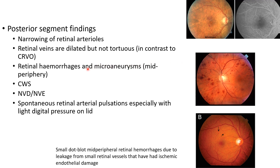There can be retinal hemorrhages and microaneurysms, especially in the mid-periphery. This picture shows microaneurysms in a case of ocular ischemic syndrome and this is the corresponding fundus fluorescein angiography image. This picture shows retinal hemorrhages in mid-periphery. These small dot-blot mid-peripheral retinal hemorrhages can occur due to leakage from small retinal vessels that have had ischemic endothelial damage. Other posterior segment findings are cotton wool spots, neovascularization of disc, neovascularization elsewhere, and spontaneous retinal artery pulsations, especially with light digital pressure on the lid.